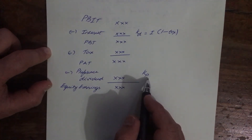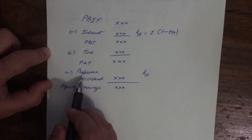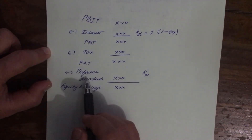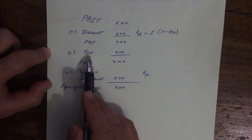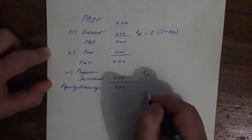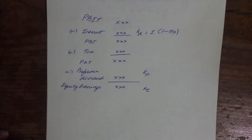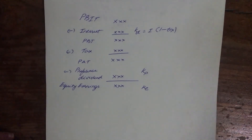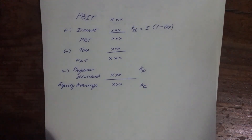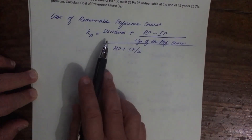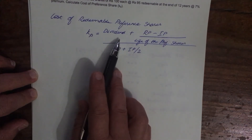For KP, we don't have to deduct tax because before deducting preference dividend, tax has already been deducted. The same applies for equity — if you find the cost of equity, there's no need for tax adjustment either. So that is the reason why, when calculating the cost of redeemable preference shares KP, we don't make any tax adjustment. This dividend is post-tax.